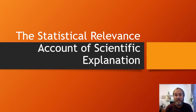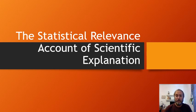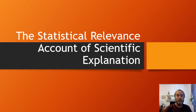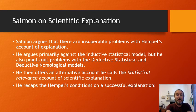This lecture is on the statistical relevance account of scientific explanation, due to Salmon. You should have already read that article, and also the lectures and readings on the deductive nomological account of scientific explanation, the objections to that account, and Hempel's deductive statistical and inductive statistical accounts — our fourth account.